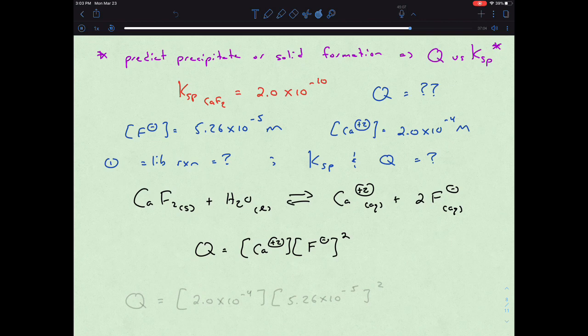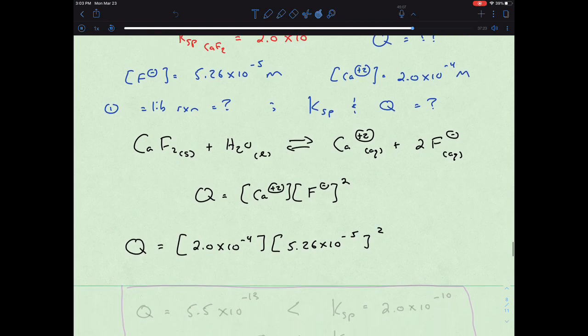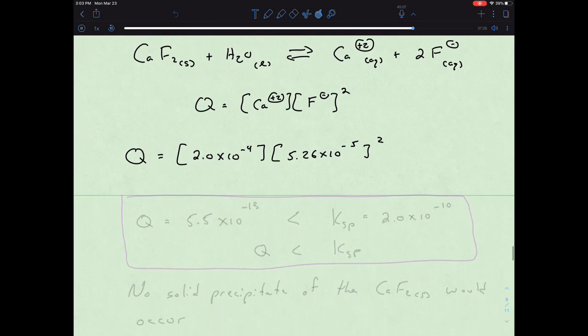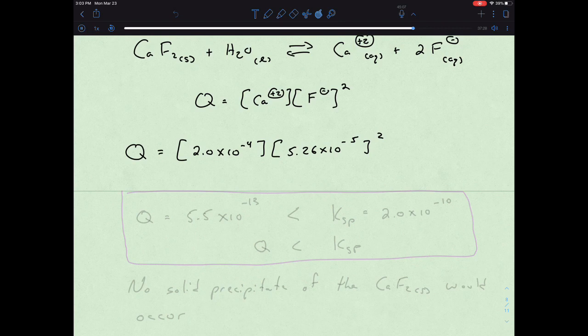So now we can just plug in those values that we have above in blue, that our calcium concentration was 2.0 times 10 to the negative 4th. Our fluoride concentration was 5.6 times 10 to the negative 5th, that quantity squared. And so we end up with Q being equal to 5.5 times 10 to the negative 13th.